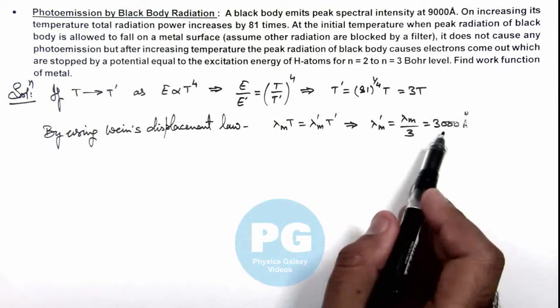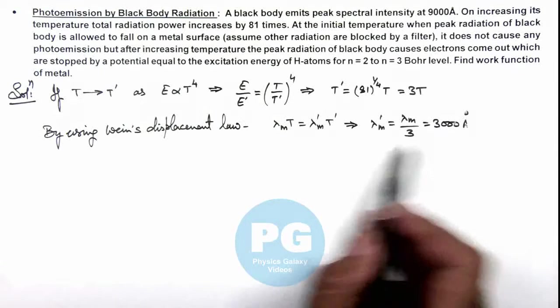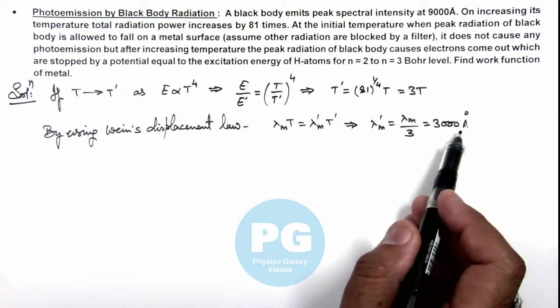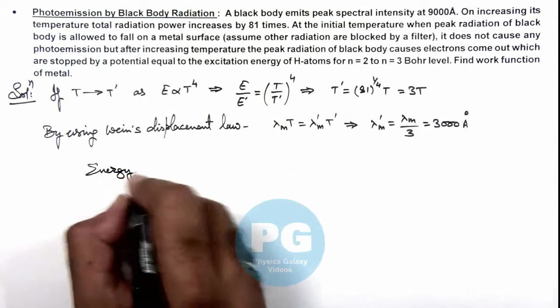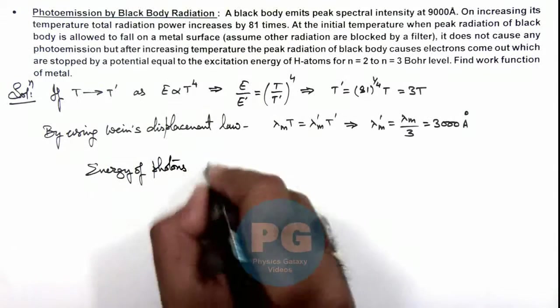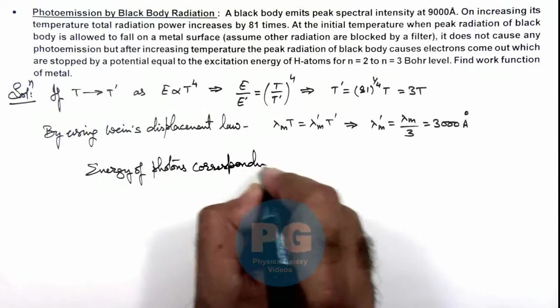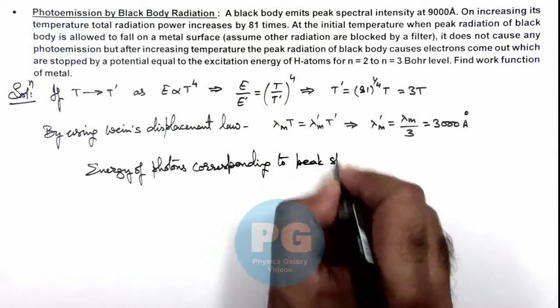As we are having the peak radiation intensity, the maximum radiation is corresponding to the wavelength 3000 angstrom. Then we can calculate the energy of photons corresponding to peak spectral intensity.